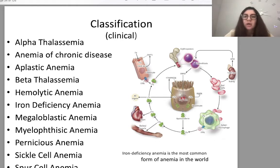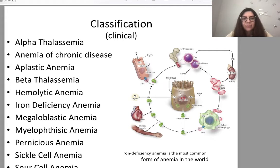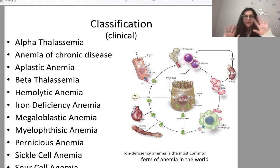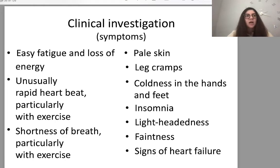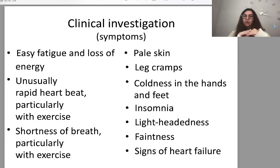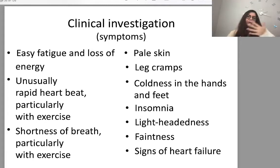Clinical classification includes: alpha thalassemia, anemia of chronic disease, aplastic anemia, beta thalassemia, hemolytic anemia, iron deficiency anemia, megaloblastic anemia, myelophthisic anemia, pernicious anemia, sickle cell anemia, and spur cell anemia. These are the most common forms. Given the large number of classification types, we'll now focus on clinical picture in general and several of the most common forms; more information is for individual study or extra class discussion.